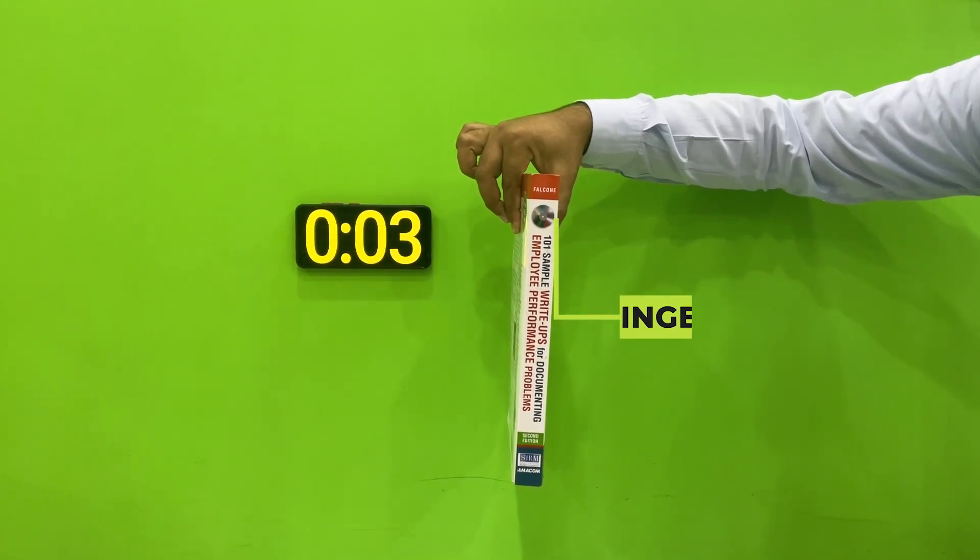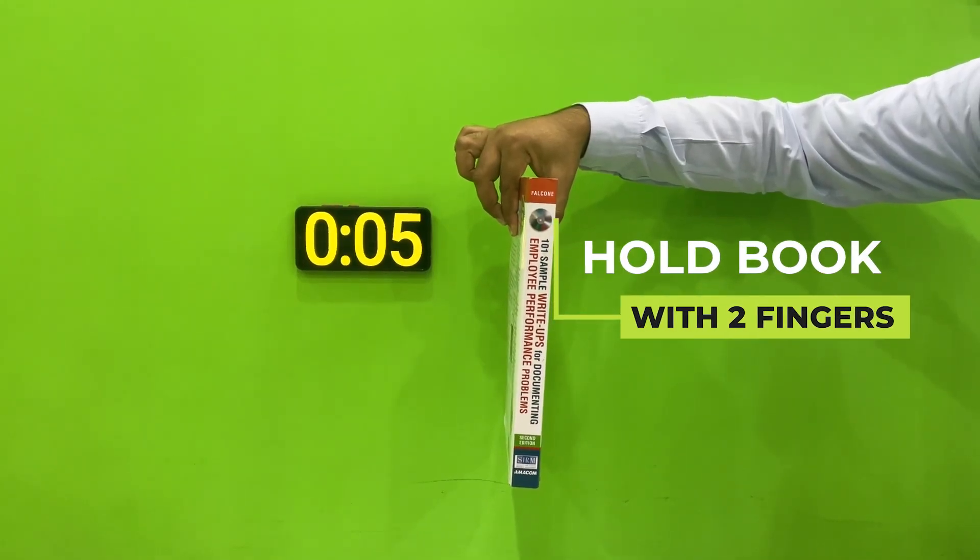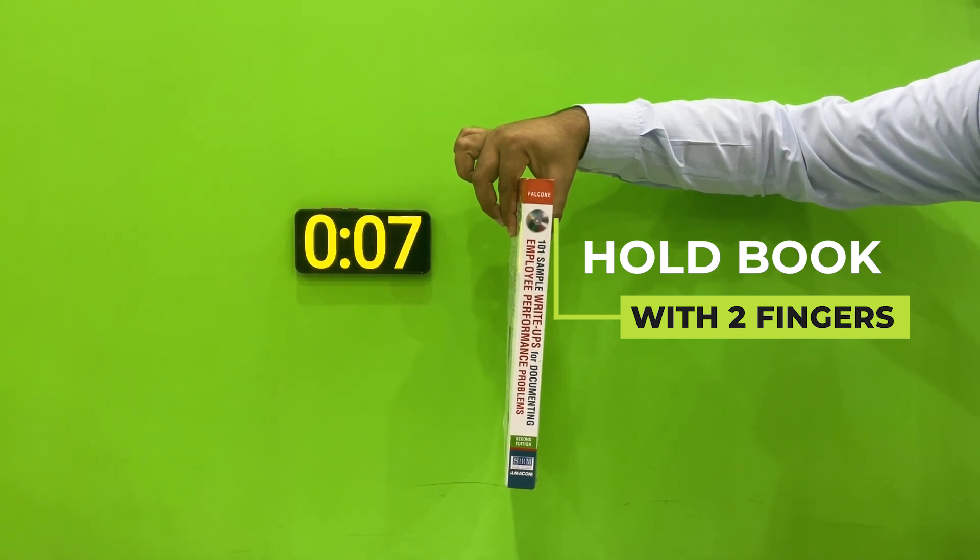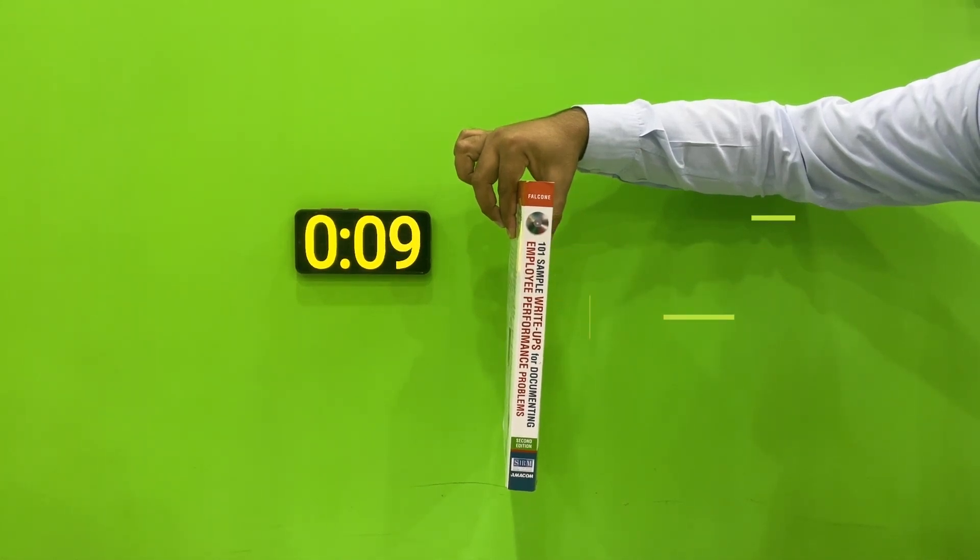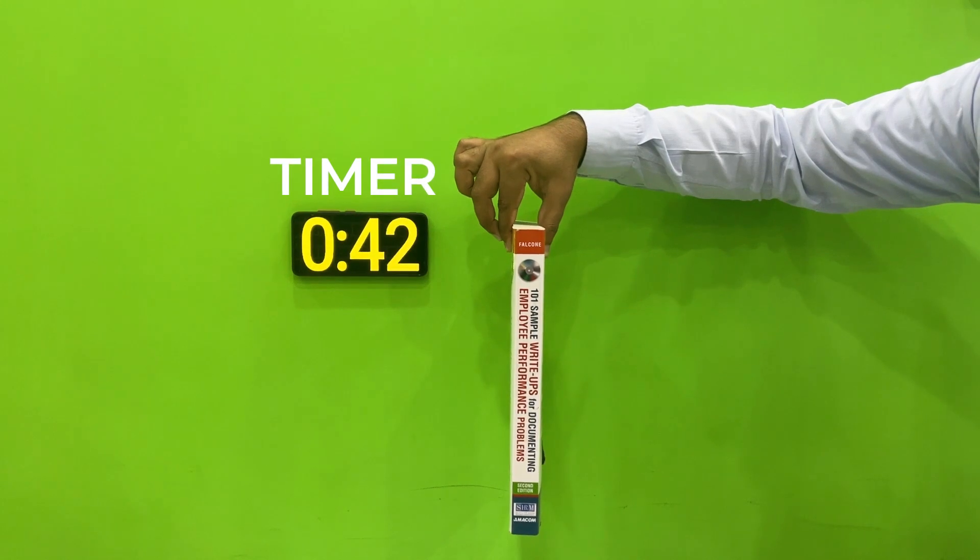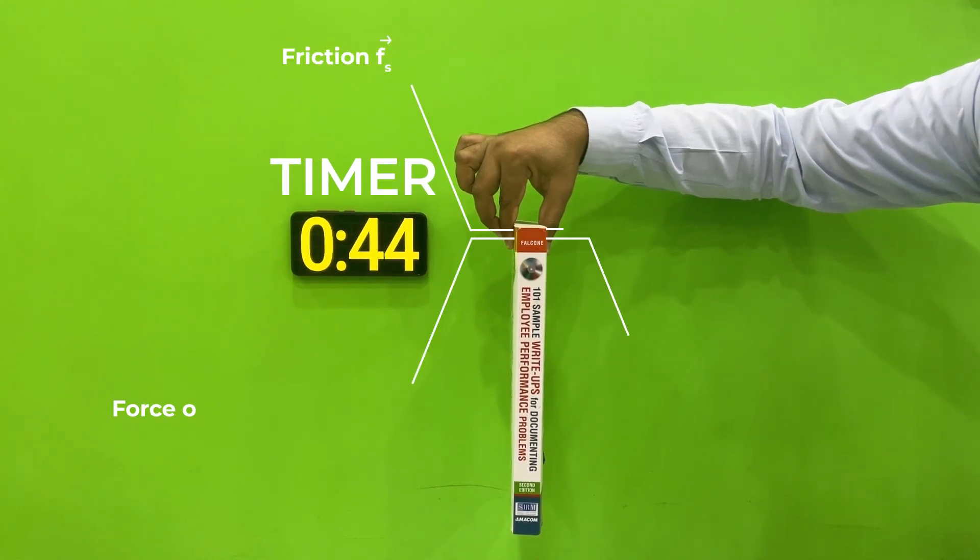In this experiment, we will hold a book with two fingers and try to hold it for the maximum time until it slips out. We set a timer to note the maximum time the book can be held.